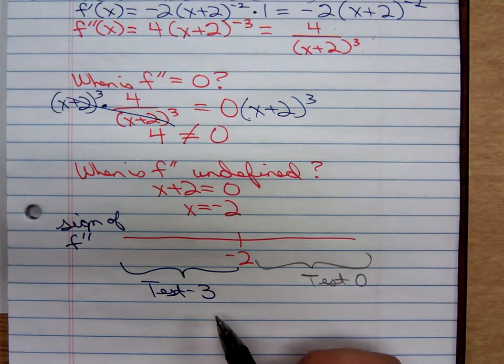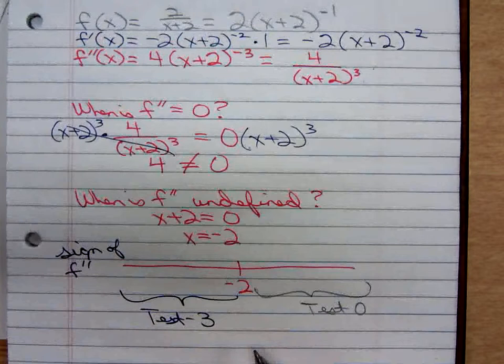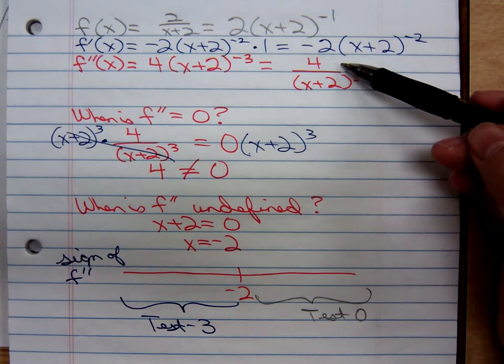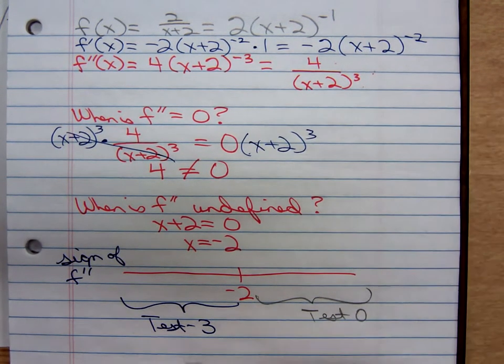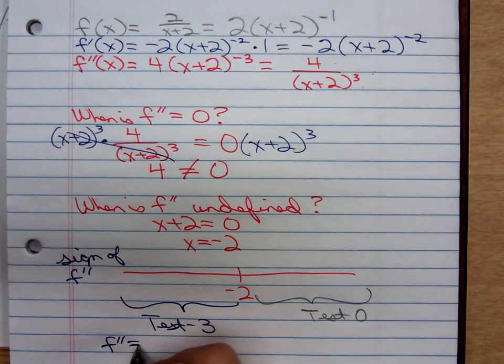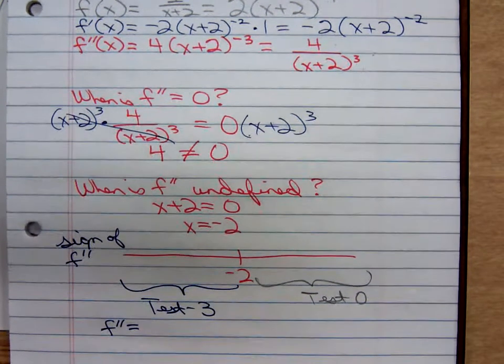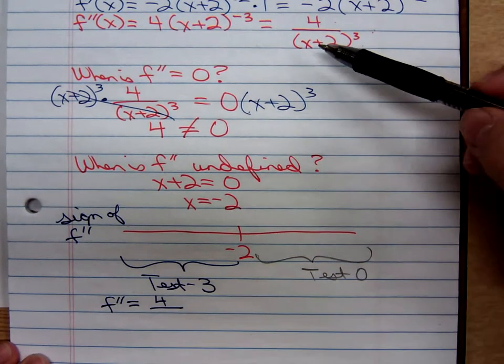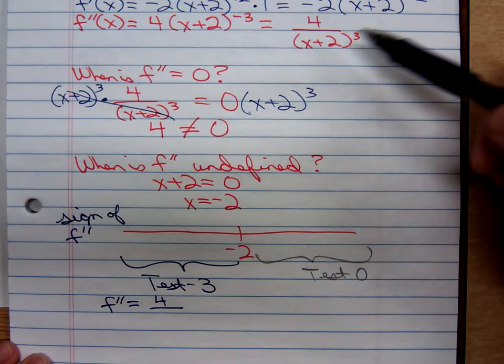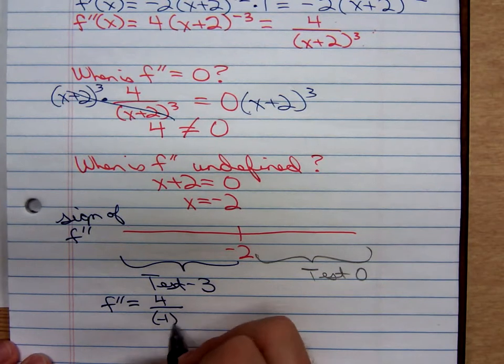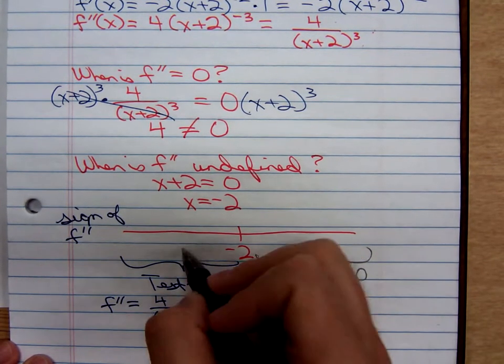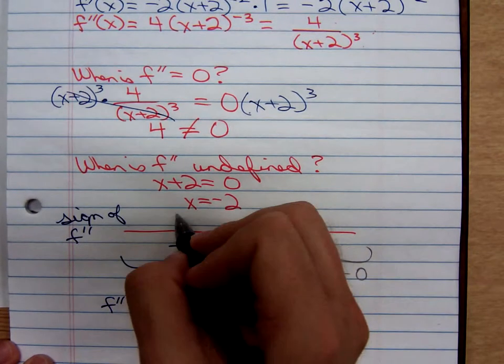Testing negative 3. We are plugging it into the second derivative right here. That is going to give us a 4 over a negative 3 plus 2 is a negative 1 cubed. And all that matters is positive or negative. That results negative. So the graph is concave downward.